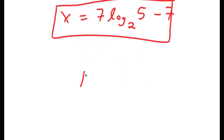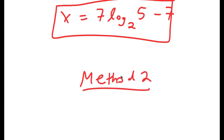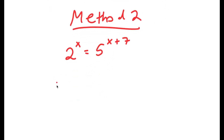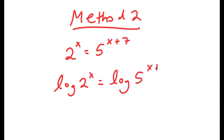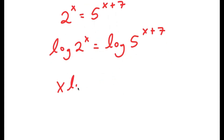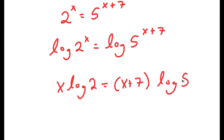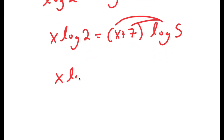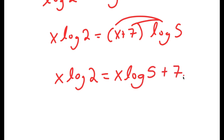Now for method 2, my equation was 2 to the power of x is equal to 5 to the power of x plus 7. I'm going to start by taking the log on both sides. So I get log of 2 to the power of x is equal to log of 5 to the power of x plus 7. Using that property, I get x times log 2 is equal to x plus 7 times log 5. If I distribute log 5, I get x times log 2 is equal to x times log 5 plus 7 times log 5.